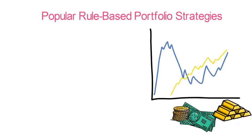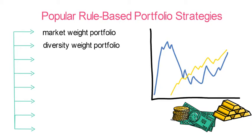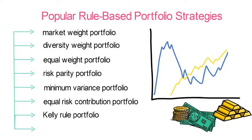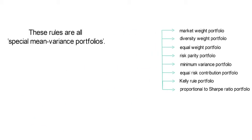In this video we talk about popular rule-based portfolio strategies: the market weight portfolio, diversity weight portfolio, equal weight portfolio, risk parity portfolio, minimum variance portfolio, equal risk contribution portfolio, Kelly Rule portfolio, and the proportional to Sharpe Ratio portfolio. You will learn in this video that these rules are all special mean variance portfolios.